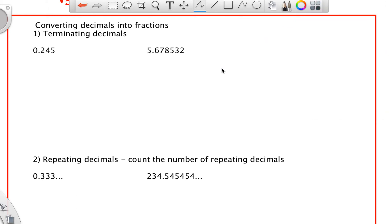So converting decimals into fractions. So there are two types. If you have a terminating decimal, so one that ends, then you go through the following process. The first thing is you would count the number of decimals. So count the number of decimal spots.